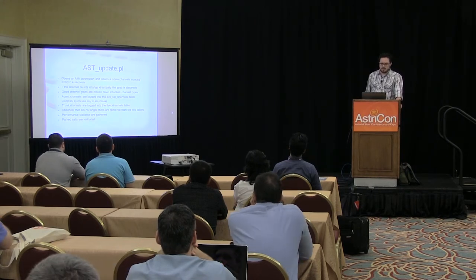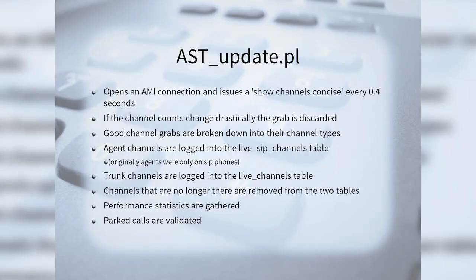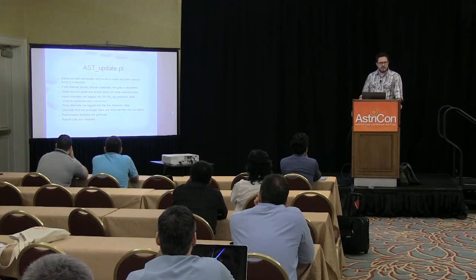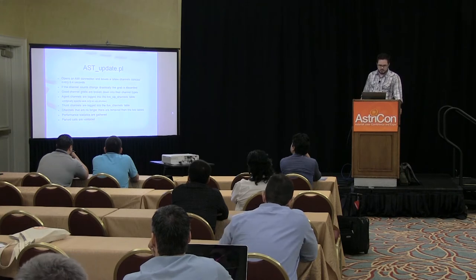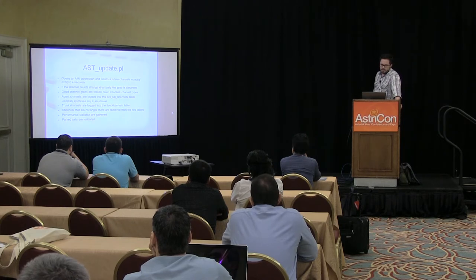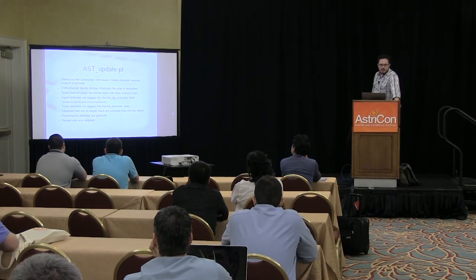AST update would open an AMI connection and issue show channels concise every 0.4 seconds, getting an update at least twice a second. If channels changed drastically, it was considered a bad grab and thrown away. Good grabs were broken down into individual channel types. Agent channels are logged into the live_sip_channels table, because originally ViciDial used T1s for outbound dialing and SIP channels for individual agent phones. Trunks are logged into the live channels table. Channels no longer present are removed, and AST update also gathers performance statistics and validates parked calls.